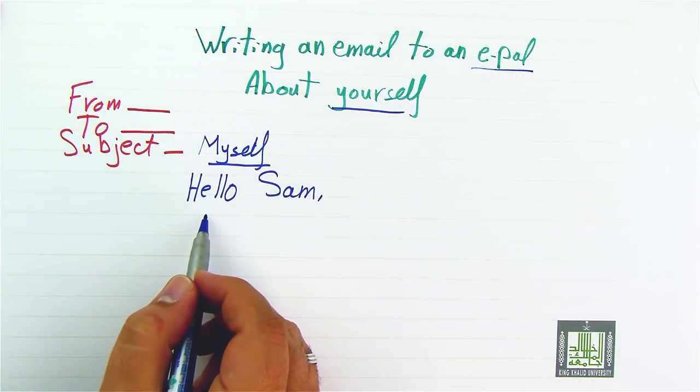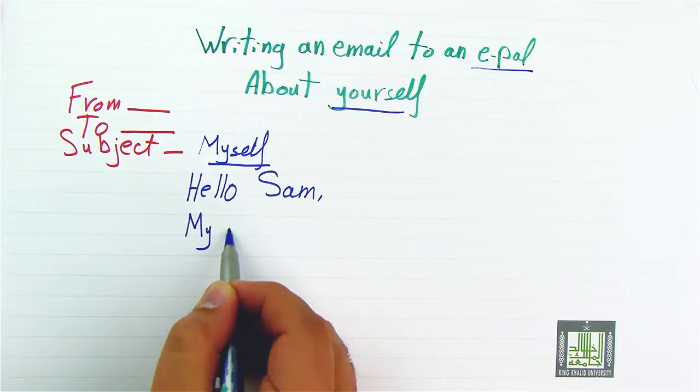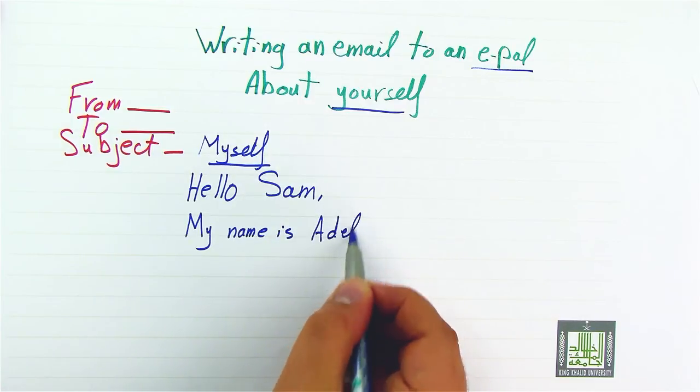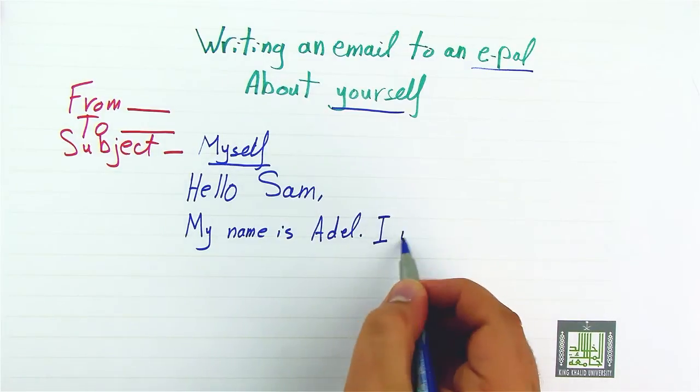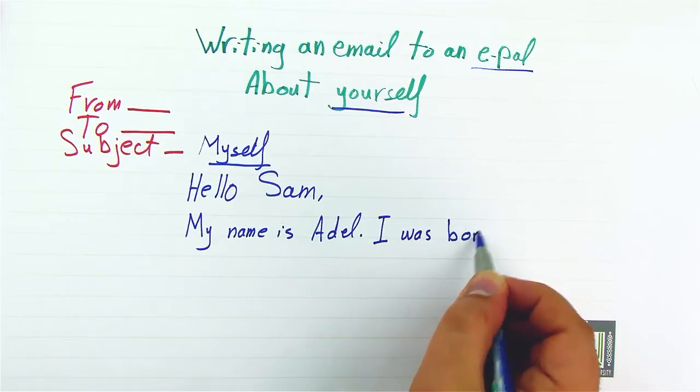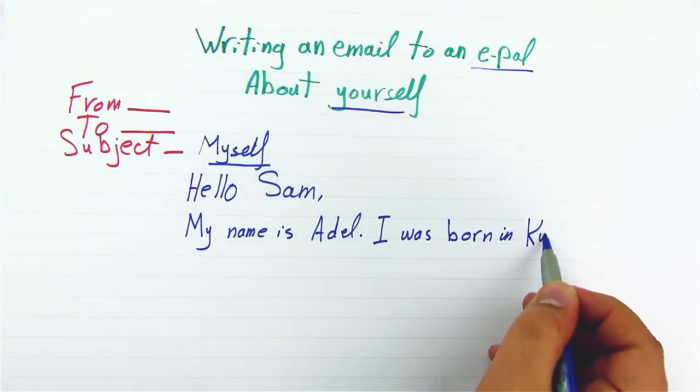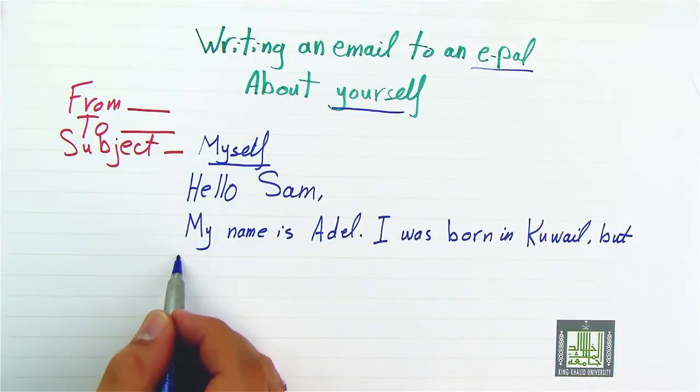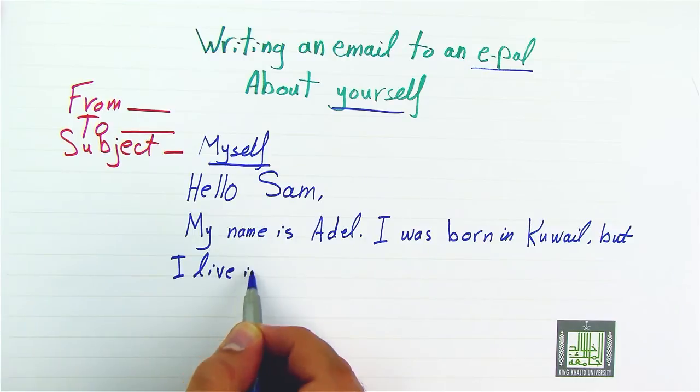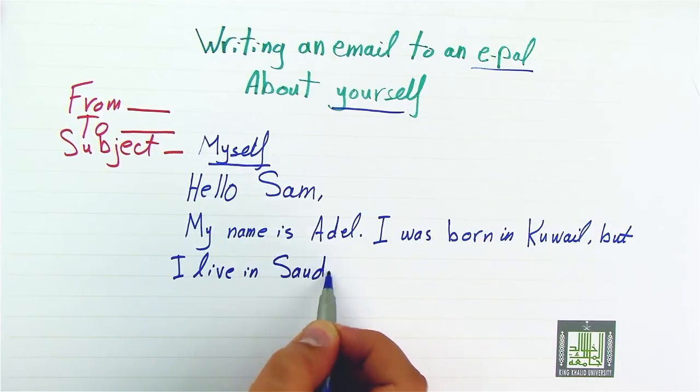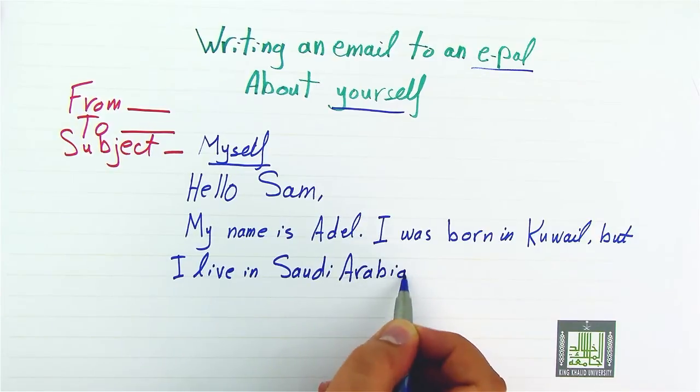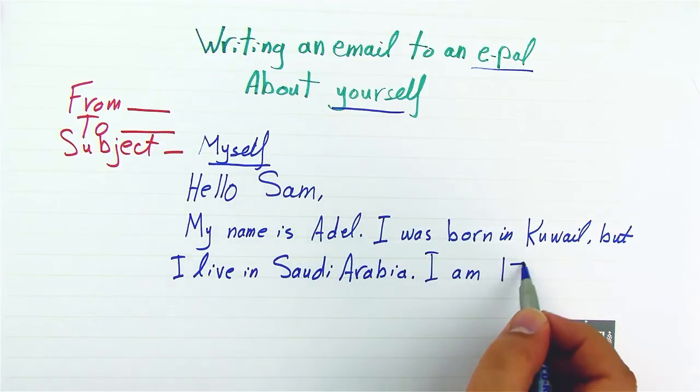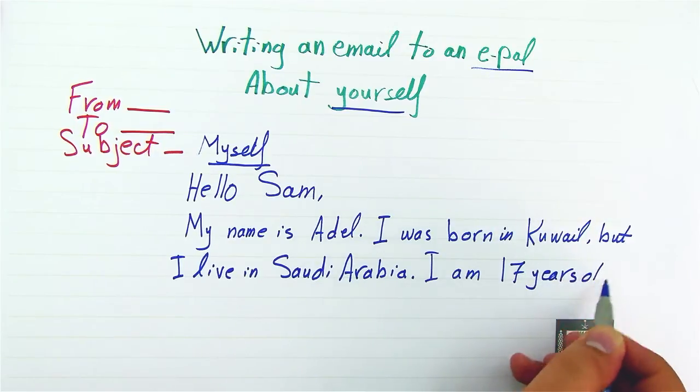Then we start talking about ourselves. We skip one line and begin: My name is Adil. I was born in Kuwait, but I live in Saudi Arabia. I am 17 years old.